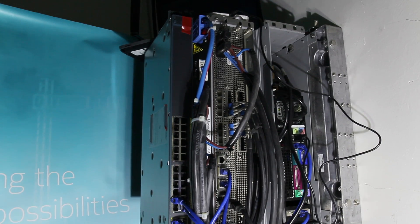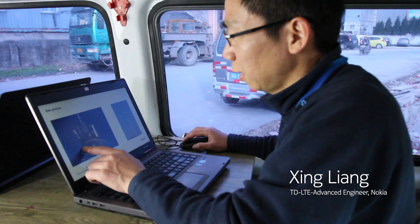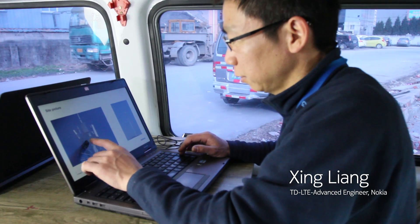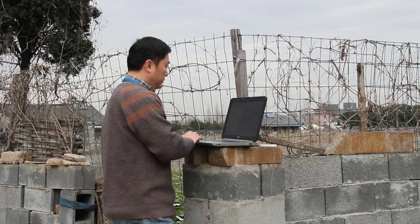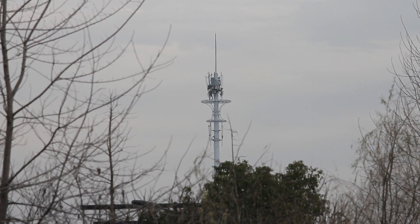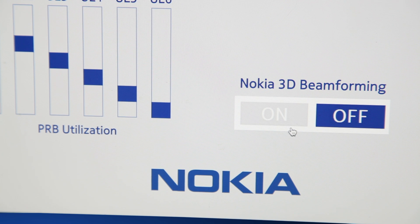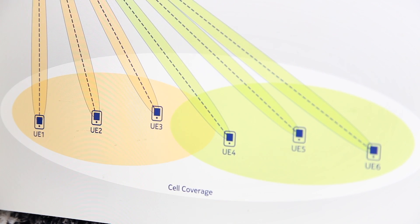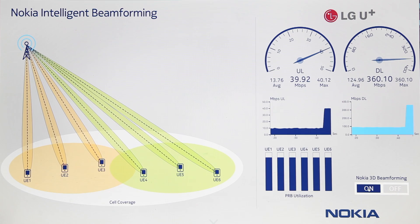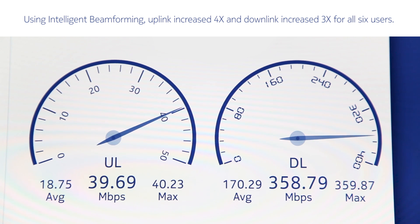We have set up Nokia's Flexi Multi-Video 10 base station with 3D beamforming software. We are using six commercially available Release 9 devices, and currently 3D beamforming is turned off. Now I will turn on 3D beamforming software, and you can see that all six users' uplink are increased by four times, and downlinks are increased by three times.